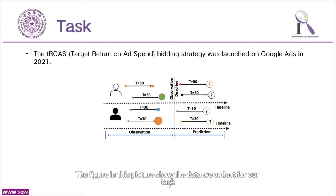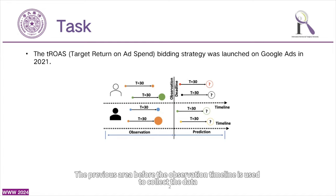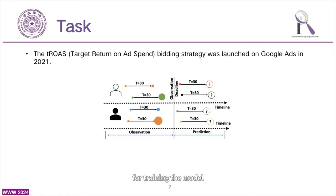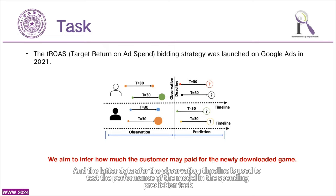The figure in this picture shows the data we collect for our task. We split the user's behaviors into two parts. The previous area before the observation timeline is used to collect the data for training the model, and the latter data after the observation timeline is used to test the performance of the model on the spending prediction task.